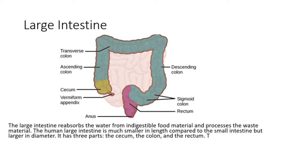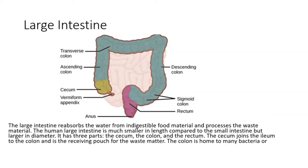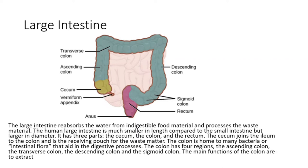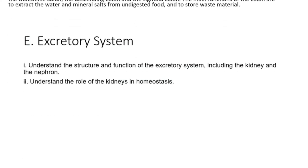The large intestine has three parts: the cecum, the colon, and the rectum. The cecum joins the ileum to the colon and is the receiving pouch for waste matter. The colon is home to many bacteria, or intestinal flora, that aid in the digestive processes. The colon has four regions: the ascending colon, the transverse colon, the descending colon, and the sigmoid colon. The main functions of the colon are to extract water and mineral salts from undigested food and to store waste material.